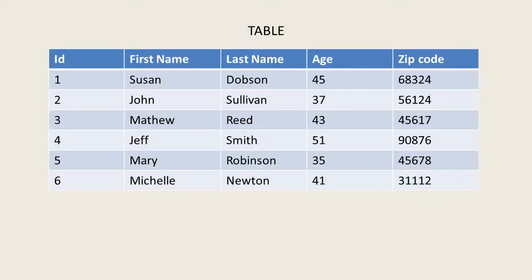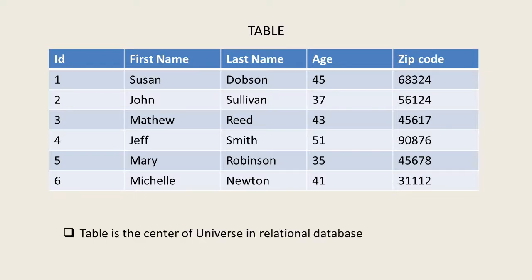The most important concept in a relational database is the table. A table is the structure which you see on the screen, and we will talk about it in more detail in the next slides. Table is the center of the universe in a relational database — it's what relational databases are all about. Everything which is good in relational databases is due to the fact that they store data in tables, and everything which is bad is also due to that same fact.